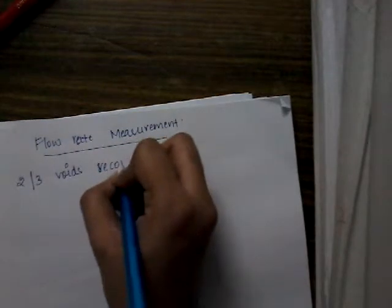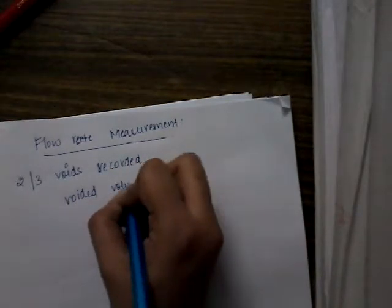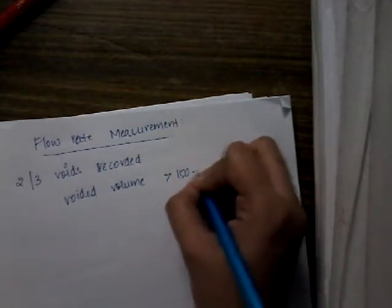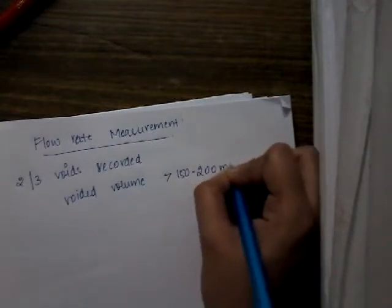For this we don't record just one flow rate but two or three voids should be recorded. In all the two or three voids, the voided volume should be more - it should be more than 150 to 200 ml.